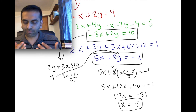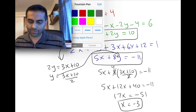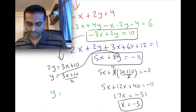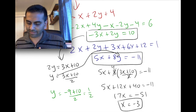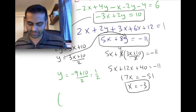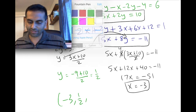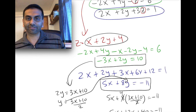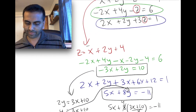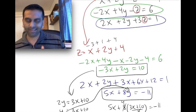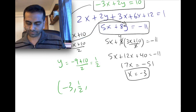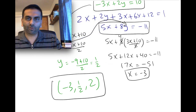Now the others are easy. Plugging x equals negative 3 into y equals (3x plus 10)/2: 3 times negative 3 is negative 9, plus 10 is 1, divided by 2 gives y equals one-half. Then z equals x plus 2y plus 4: negative 3 plus 2 times one-half is negative 3 plus 1, which is negative 2, plus 4 gives z equals 2. The final answer is x equals negative 3, y equals one-half, and z equals 2.